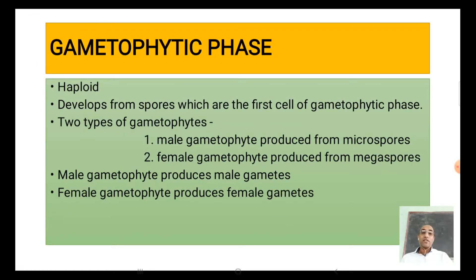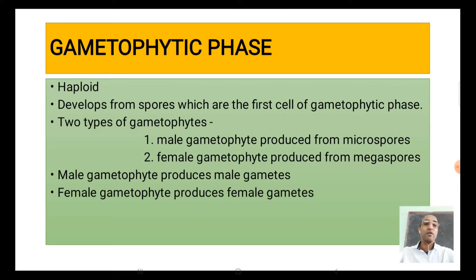The gametophytic phase is the haploid phase. Unlike the sporophytic phase which is diploid, the gametophytic phase is haploid. It develops from spores, which are the first cells of the gametophytic phase. Two types of gametophytes are formed: the male gametophyte, produced from microspores, and the female gametophyte, produced from megaspores. The male gametophyte produces male gametes and the female gametophyte produces female gametes.